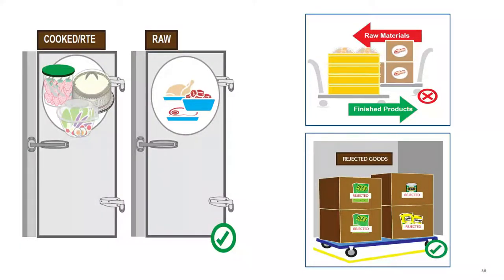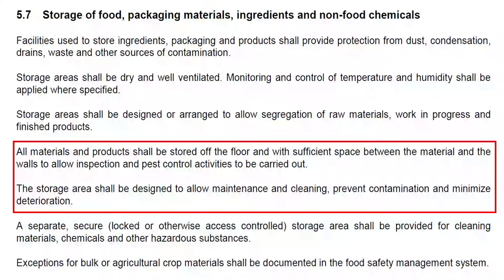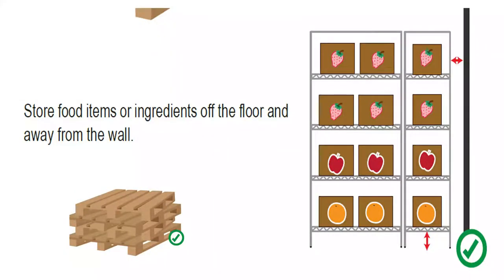The storage area shall be designed or arranged to allow segregation of raw materials, work-in-progress, and finished products. Designate separate areas for cooked and raw products, and if that is not possible, proper segregation must be maintained. There must also be a place for rejected goods. All material and products shall be stored off the floor with sufficient space between material and the wall, to allow inspection and pest control activities to be carried out.